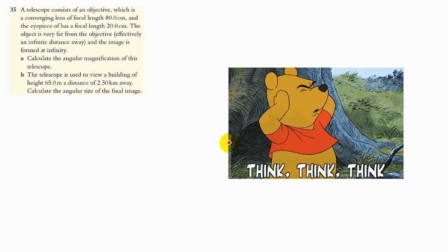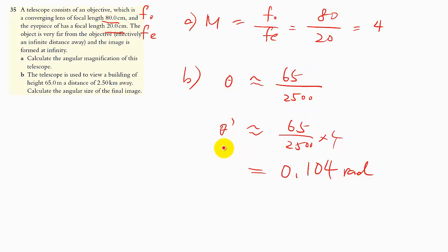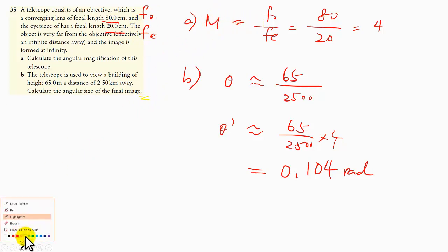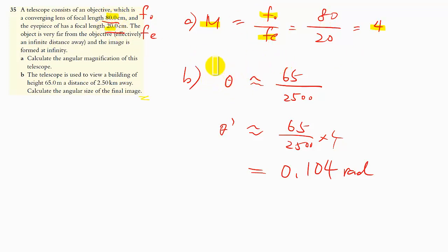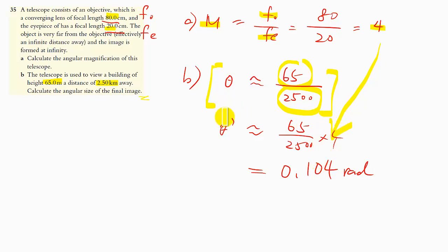This next question follows almost the same format. From the given information, use the angular magnification formula to find M equals 4, because the focal lengths are 80 cm and 20 cm. For the angle, drawing the diagram gives theta equals 65 divided by 2500 — that's the height divided by the distance. Since the angular magnification is 4, multiply by 4 to find the final angle in radians.